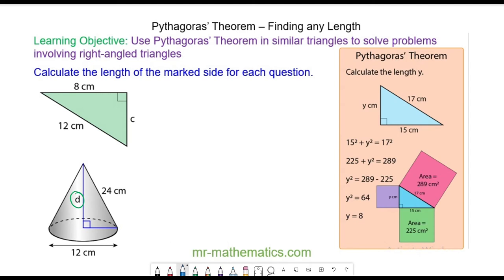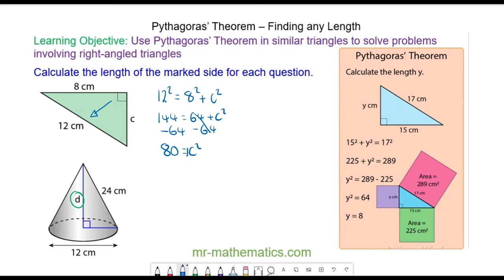Okay, for question C, the hypotenuse is the 12 centimetre side, because it is opposite the right angle. The area of the square on the hypotenuse side is equal to the area of the square on the 8 side, plus the area of the square on the side of C. So 144 is equal to 64 plus C squared. We can take away 64 from both sides — these will cancel — so 80 will equal C squared. We can square root both sides, and the square root of 80 is approximately 8.9. So the length of C is equal to 8.9 to one decimal place.